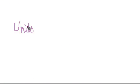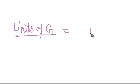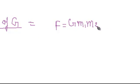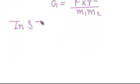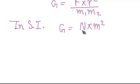Units of G. We know gravitational force F equals G times m1 times m2 upon r squared. So G equals F times r squared upon m1 times m2. In SI units, G equals Newton meter squared upon kilogram squared.